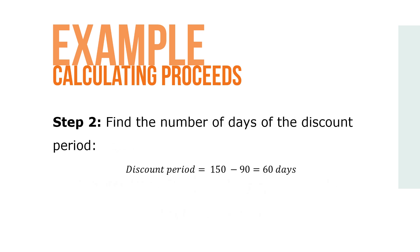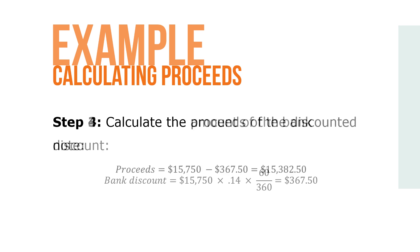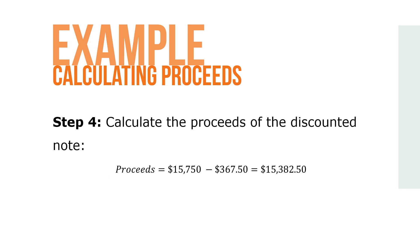Step 2: Find the number of days in the discount period, which is equal to 150 minus 90, or 60 days. Step 3: Calculate the amount of the bank discount, which is equal to $15,750 times 0.14 times 60/360, or $367.50.